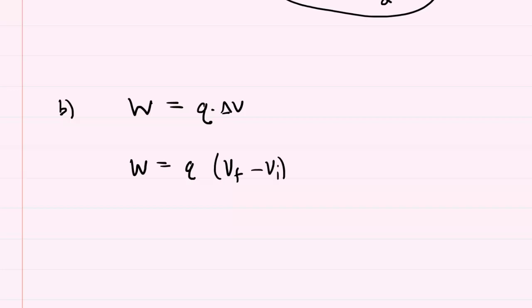Notice further that the initial potential should actually just equal 0 because the charge q was located infinitely far away from the center of this square. So if it's located infinitely far away,